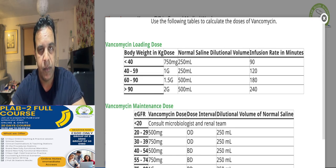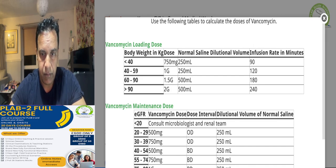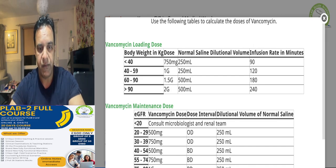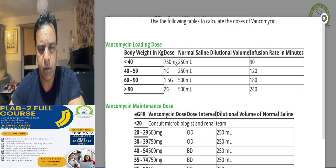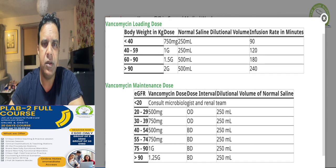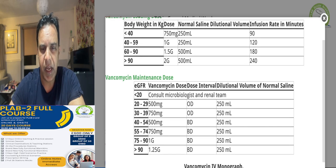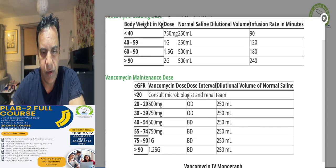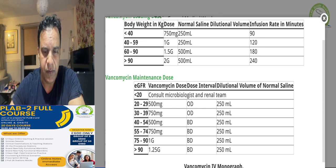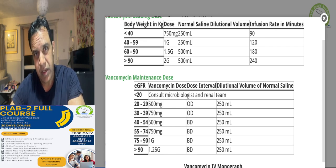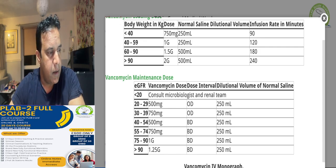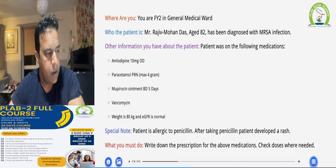The loading dose of 1.5 grams should be given diluted in 500 milliliters of normal saline over three hours. The remaining doses should be given according to the patient's eGFR. As the eGFR is normal, we can go for the higher dose, which is 1.25 grams twice daily, again given diluted.